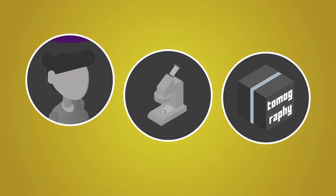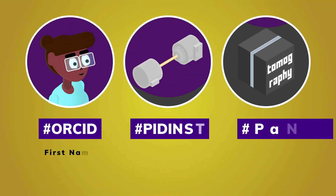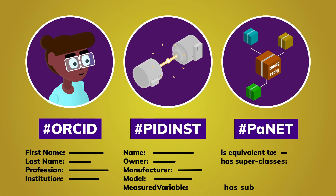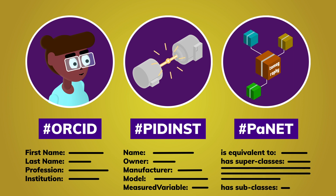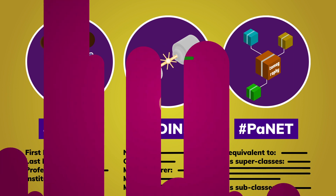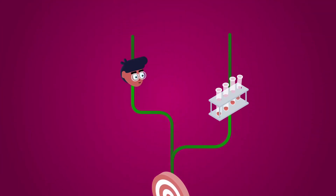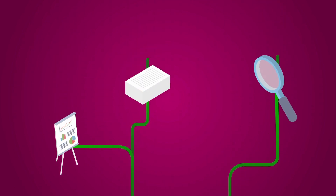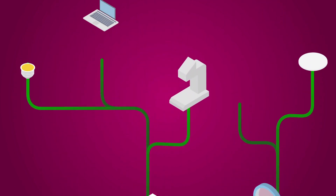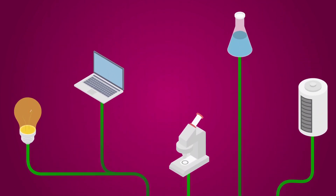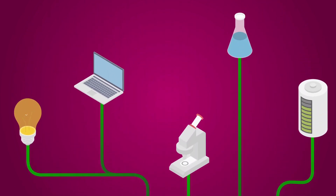Every time you can, use persistent identifiers to describe the metadata fields unequivocally. This is relevant for research papers, but also datasets, persons, instruments, and techniques. You can imagine the information a bit like a family tree — for future science, it will be important to know how we got there.